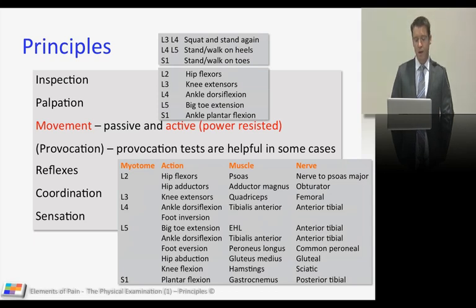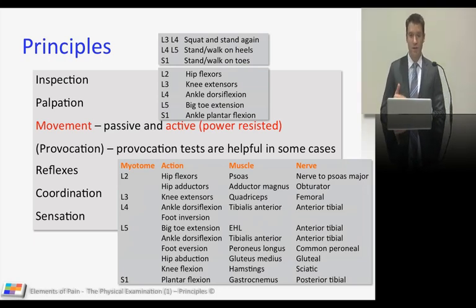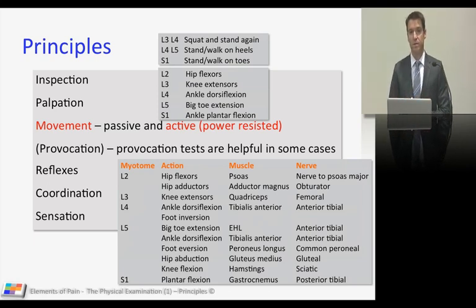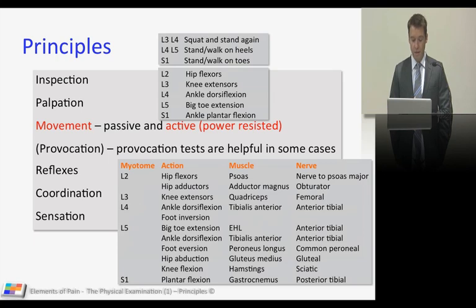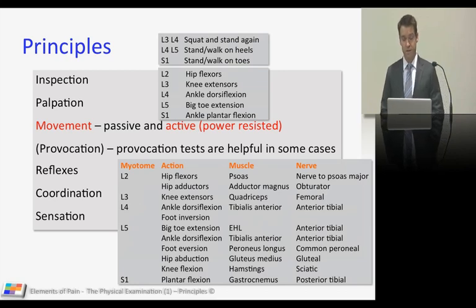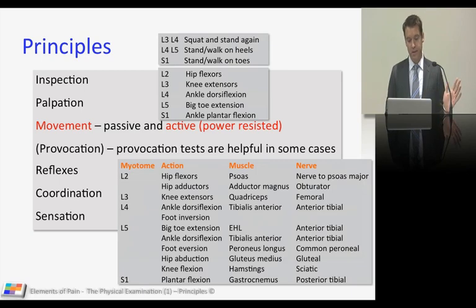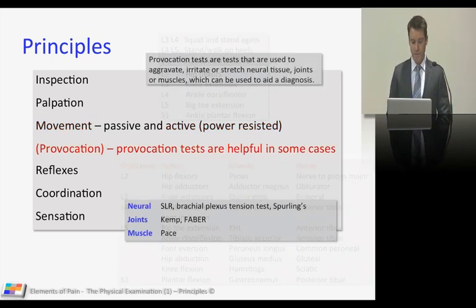Now let's move on to the lower limb. While your patient is standing, you can get them to squat and stand to assess proximal muscle power — the L3/L4 myotomes. Getting them to walk on their heels assesses L4/L5, and standing on tiptoes assesses S1. Hip flexors are L2, knee extensors L3, ankle dorsiflexion L4, big toe extension L5, and ankle plantar flexion S1. A simple way to fly through your lower limb screeners for power.